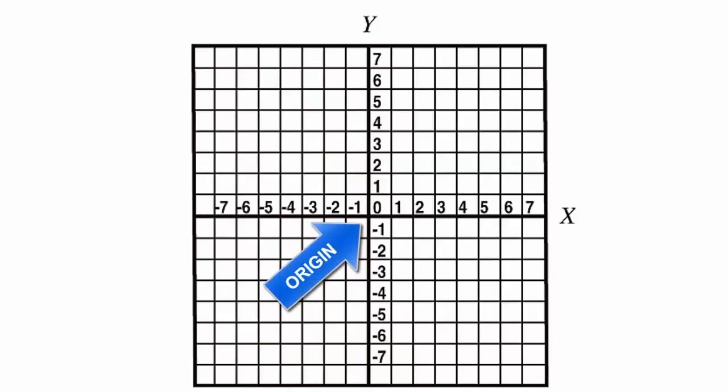Here, the x-axis lies horizontally and the y-axis lies vertically, both passing through the zero of the other.